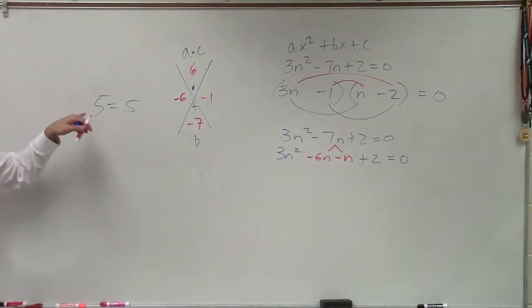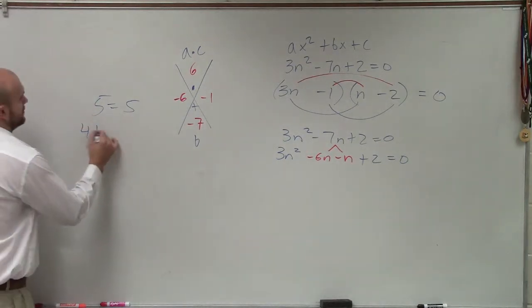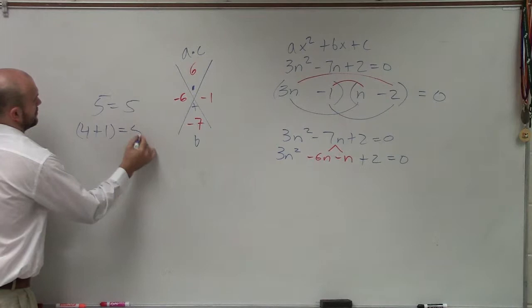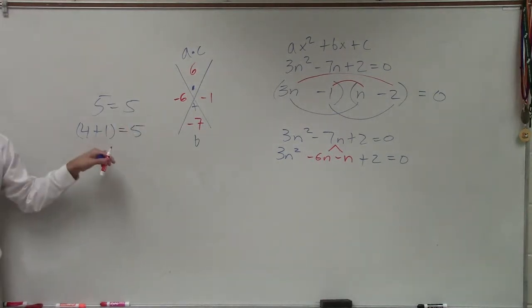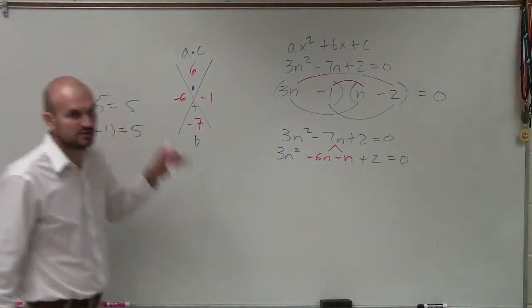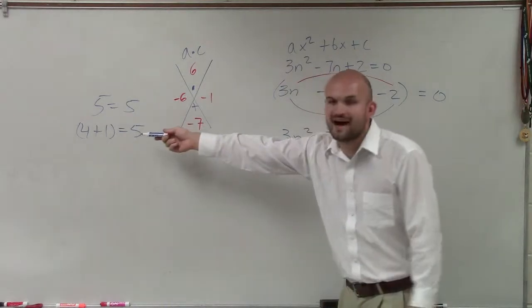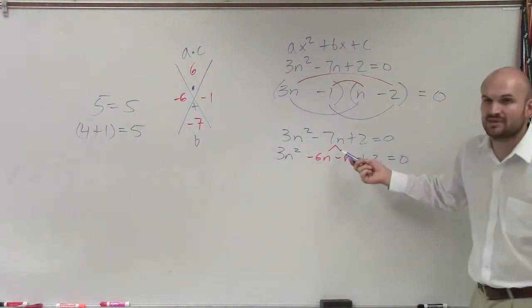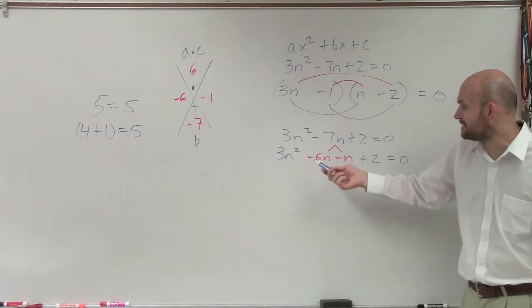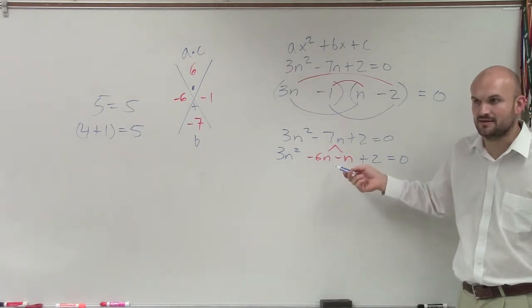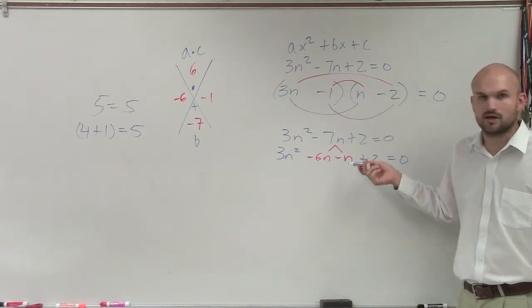Those are equivalent equations. All I did was I broke up 5 into 4 plus 1. This is the same thing. I'm just breaking up negative 7 into negative 6 minus n or negative 6n minus n. That's all I'm doing.